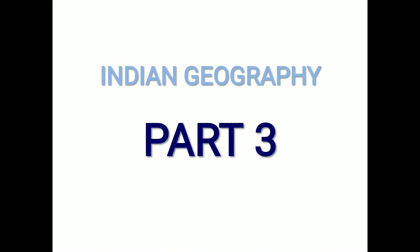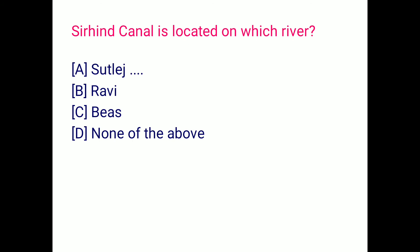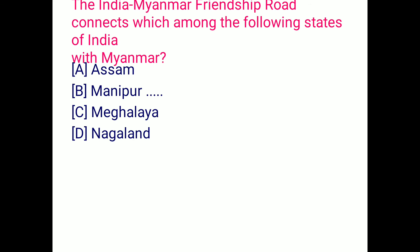Welcome to our YouTube channel. Today we are going to discuss Indian Geography Part 3. The first question: Sirihan Canal is located on which of the following rivers — Sutlej, Ravi, Beas, or None? The correct answer is that Sirihan Canal is located on the Sutlej River.